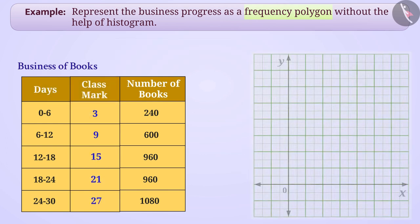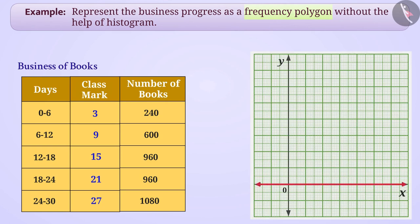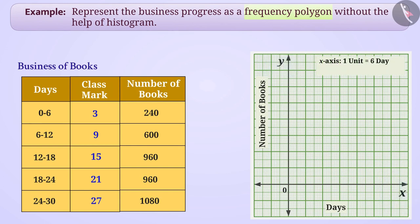Now we will represent class intervals on x-axis means days and frequency on y-axis means number of books. For this, we have to choose the appropriate scale on each axis. We can take 1 unit is equal to 6 days on the x-axis and 1 unit is equal to 240 books on the y-axis.